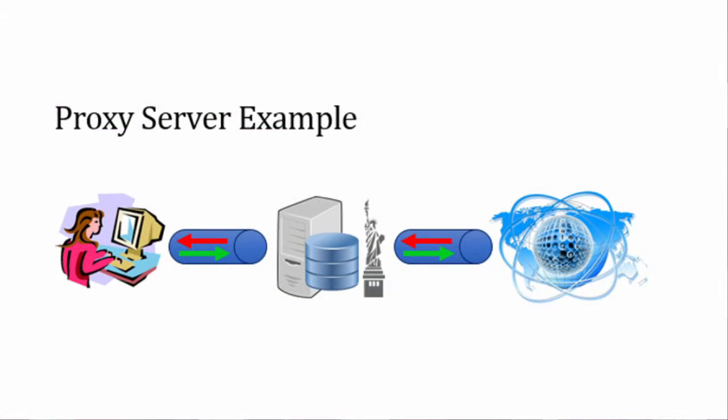It's possible to disguise your IP address by routing your connection through something called a proxy. A proxy is just a computer with a different IP address. If you visit a website using a proxy located in New York, the website will think you live in New York.